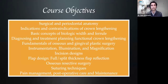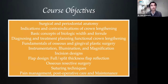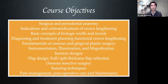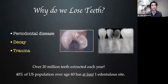So we look at our course objectives for tonight. In regards to crown lengthening, we're going to review the surgical and periodontal anatomy, indications, contraindications of the procedure itself, really focus on the biologic width. We'll go over things from a surgical standpoint: incision design, flap design, osseous resective surgery techniques, suturing techniques, and we'll spend some time on post-operative and maintenance areas.